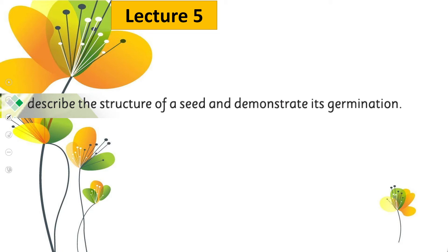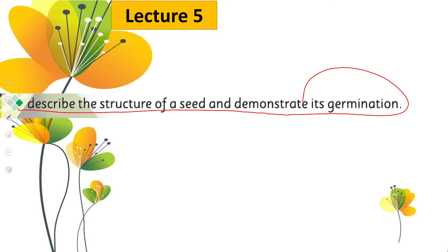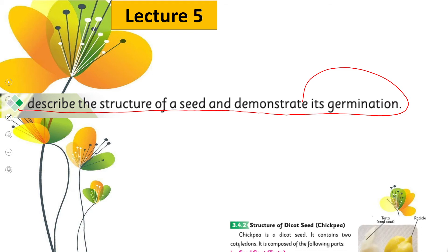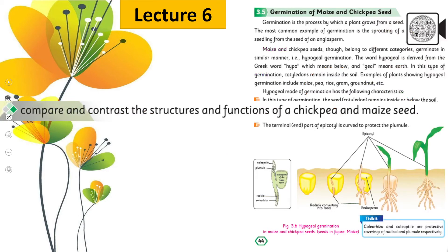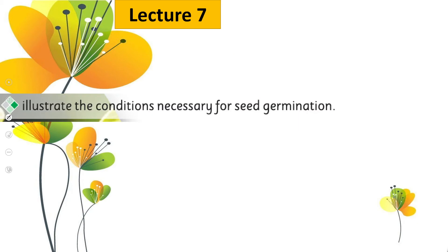In lecture number five, we will again describe the structure of seed and demonstrate its germination. Building on lecture four, hum monocot seeds ko dekhenge aur germination kaise hoti hai. Then in lecture number five we will discuss dicot seeds and how they germinate. The reading page is page number 43, aur hum comparison bhi kareenge monocot seeds mein aur dicot seeds mein.